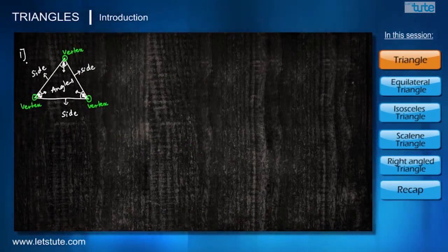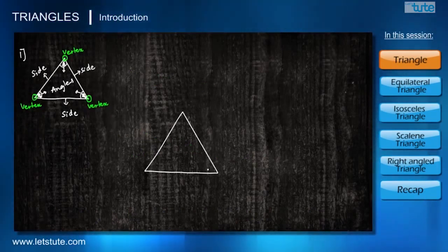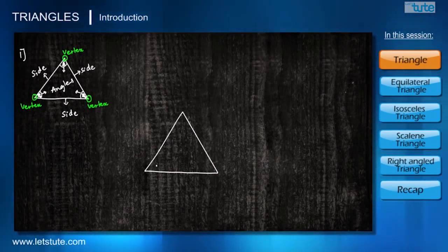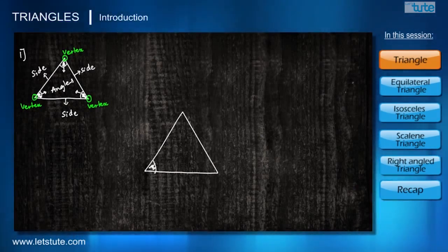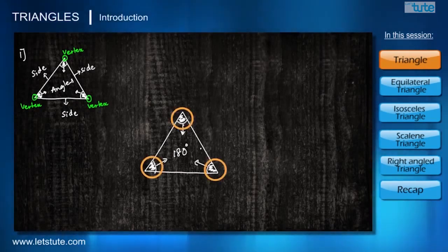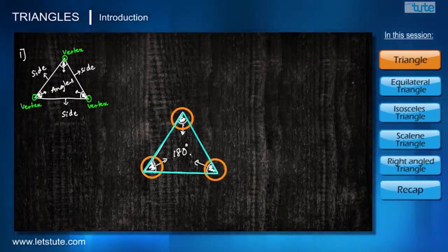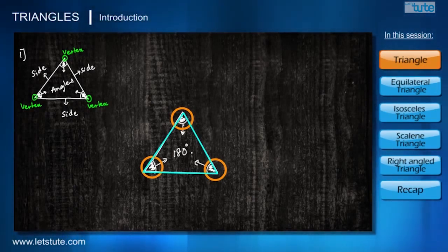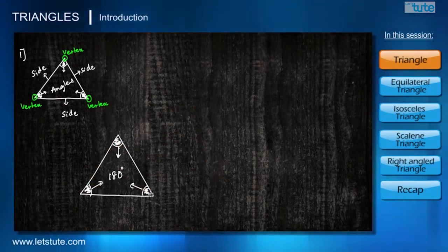Now that we are familiar with the shape triangle, let's learn some important things about it. The most important thing we should know is that when we add the measures of all three angles of a triangle, it will always give 180 degrees. The second thing is that the angles measured and lengths of the sides of a triangle are closely related — in other words, they are interdependent.